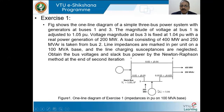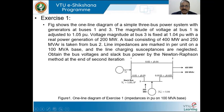There are three buses: bus 1, bus 2, and bus 3, with generators at bus 1 and bus 3. The magnitude of voltage at bus 1 is adjusted to 1.05 per unit.